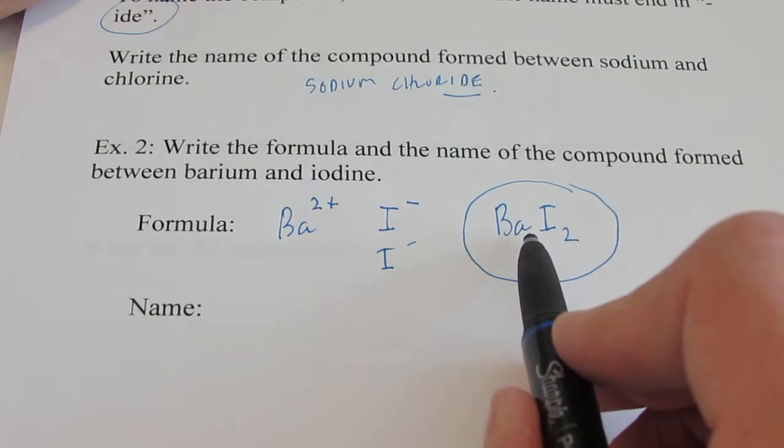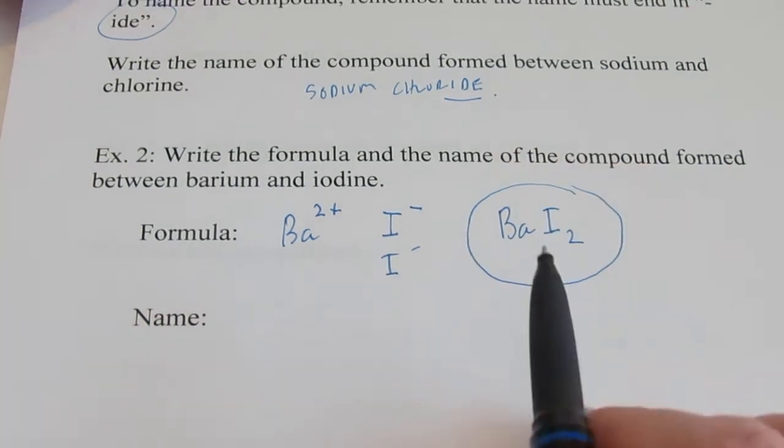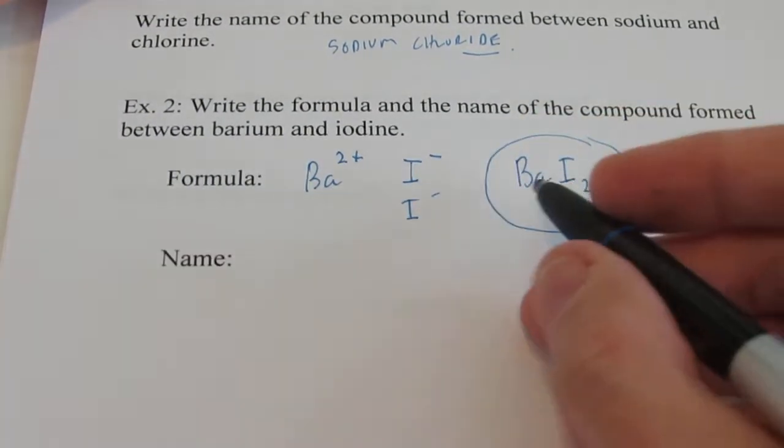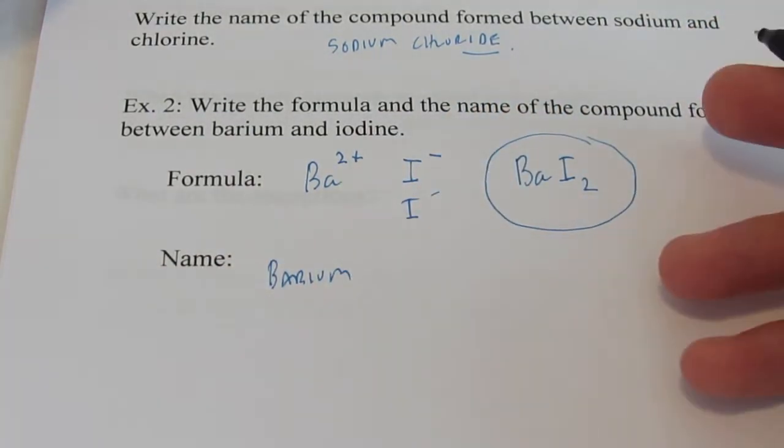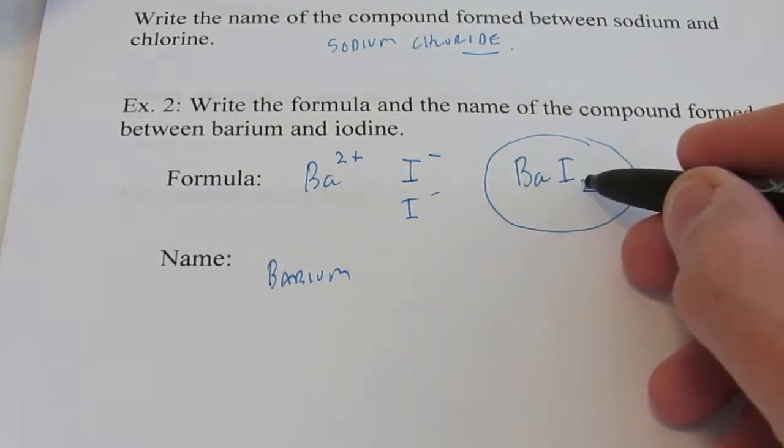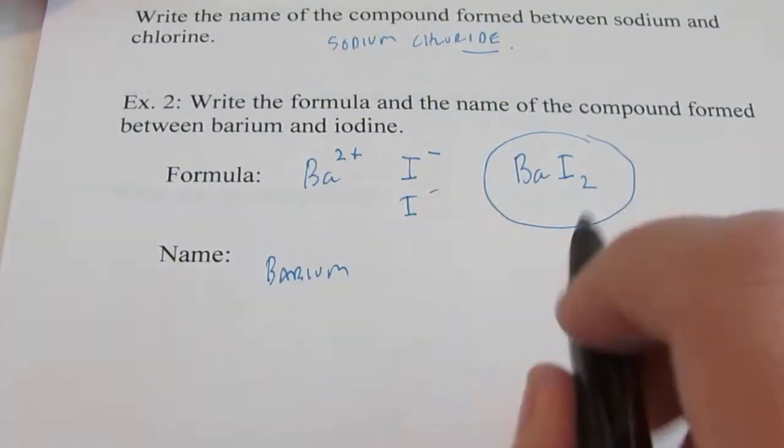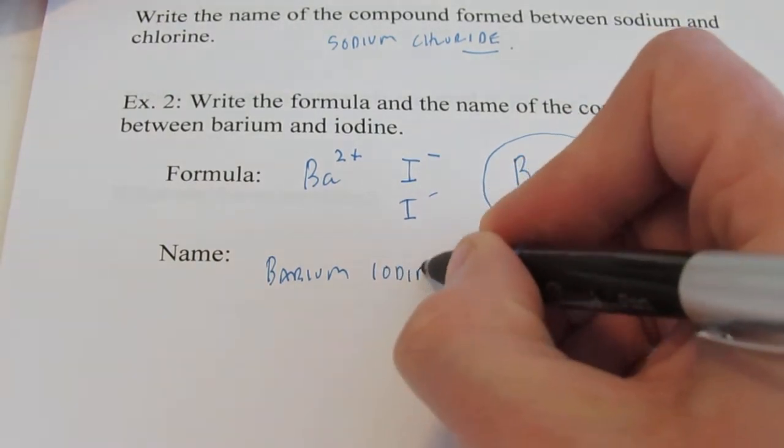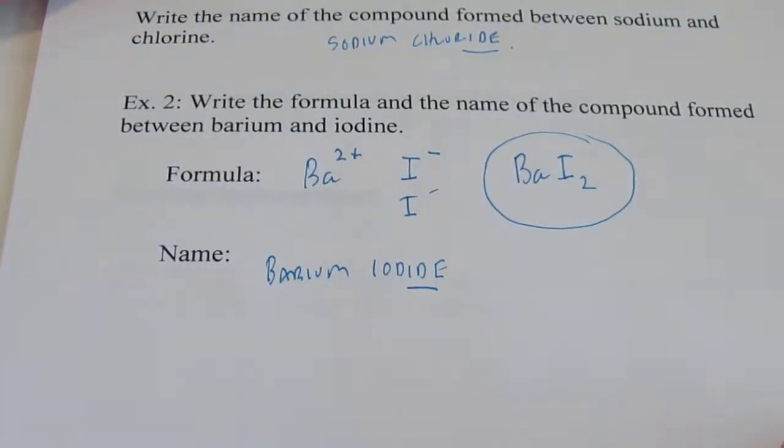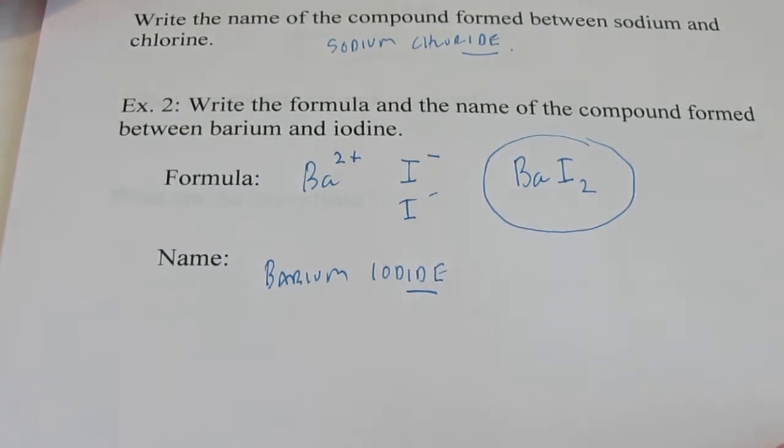I only need one barium, so I don't put any numbers there. It's understood that there's one there. Now the name is pretty simple. Ba is barium, so we just write barium out. And I is iodine, but we don't end it with -ine. It's binary. It's only made up of two types of atoms. So it becomes barium iodide.